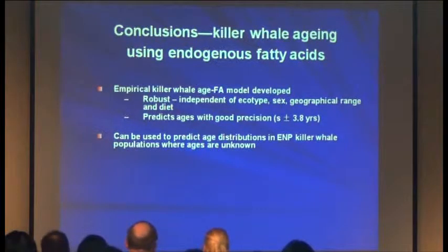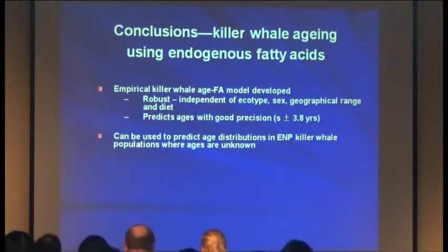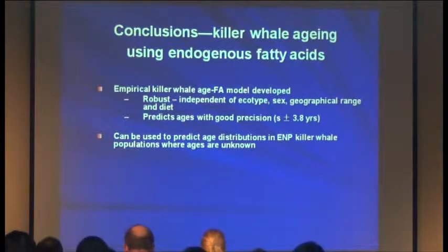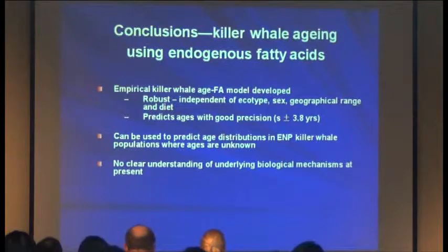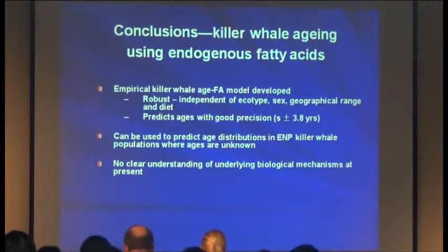It can be used to predict age distributions in eastern North Pacific killer whale populations where ages are unknown — for animals in remote areas that may not have photo ID catalog information. We don't have a clear understanding of the underlying biological mechanisms at present on why this works. The results were published in Marine Ecology Progress Series.